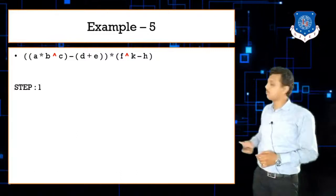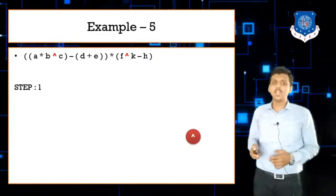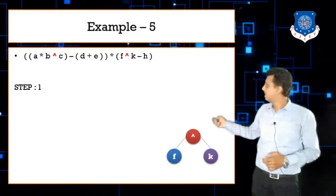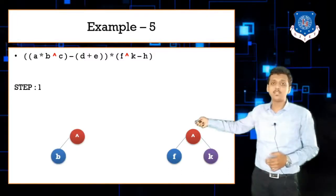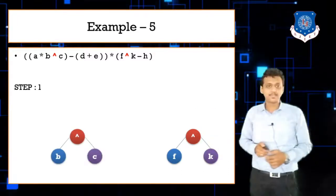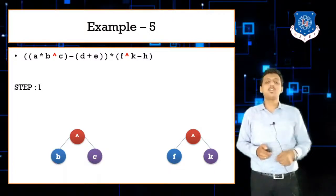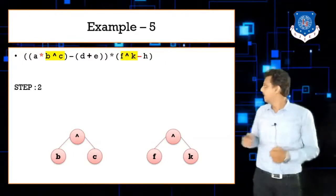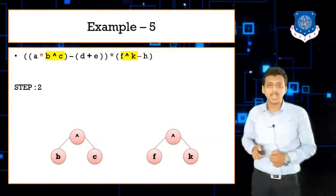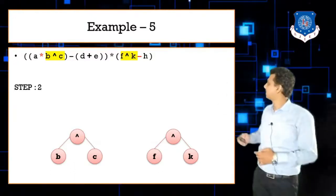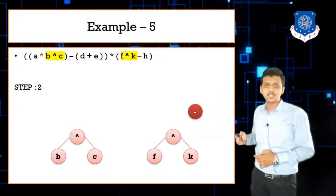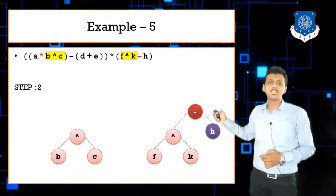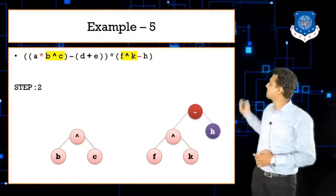From the first bracket, take b ^ c: caret with b on the left, c on the right. From the last bracket, take f ^ k: caret with f on the left, k on the right. Then for the sub-expression f ^ k - h: minus becomes the root, the left link connects to f ^ k, and h is the right child.